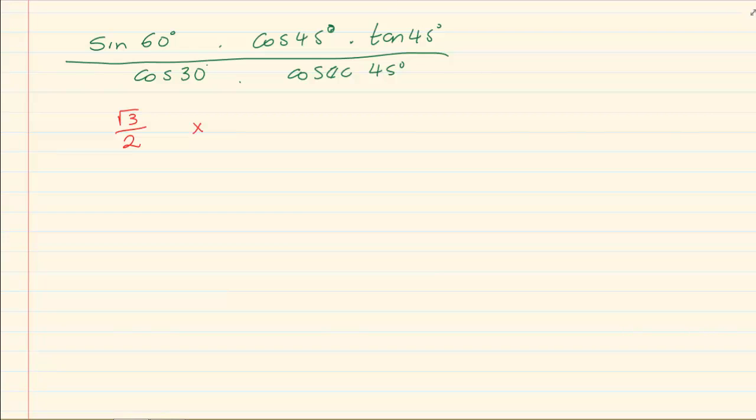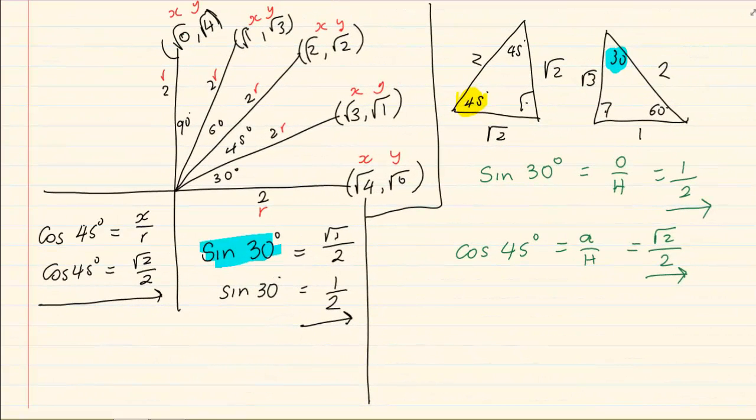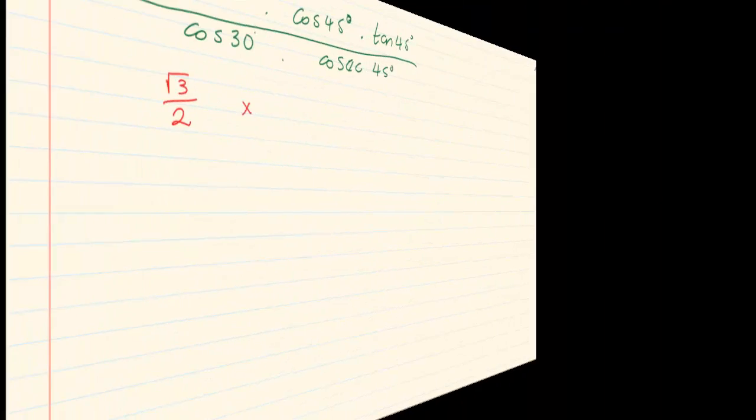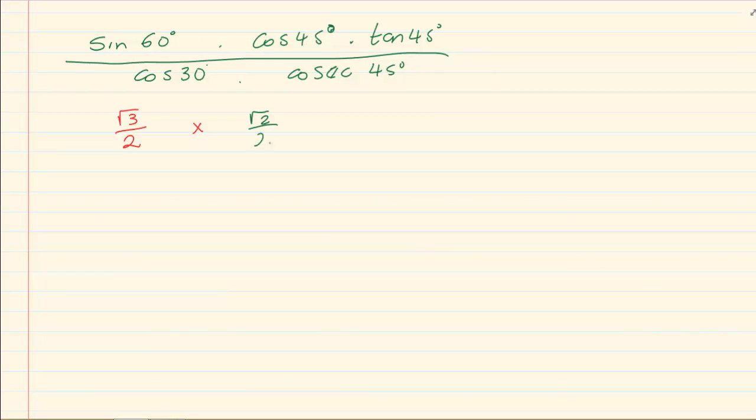Cos of 45. We're looking at the 45 line. X over R. So it's root of 2 over 2. Root of 2 over 2.